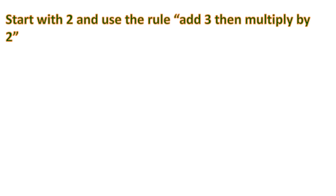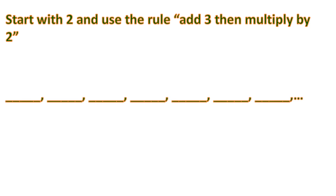Now let's have another example. We're gonna generate a pattern starting with 2 and use the rule: add 3, then multiply by 2. So we have these blanks to fill in. Starting with 2, we add 3 to get 5, then times 2 gives 10.